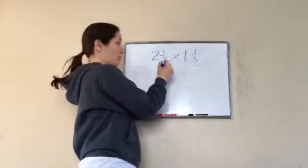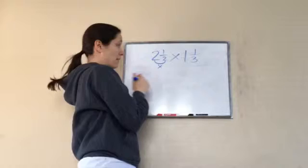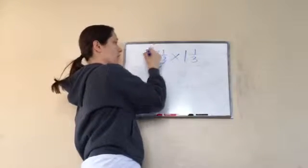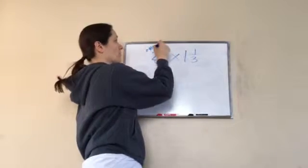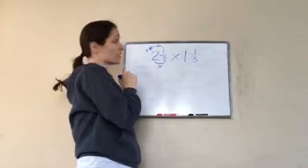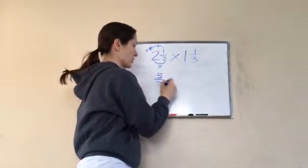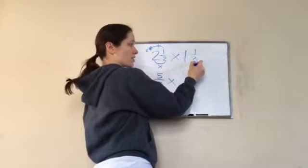I'll do the first one for you. Two times two is four. And then four times one. Plus one is? So it's five over two. Five over two. You're good at times.